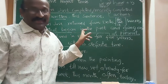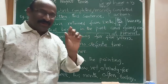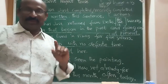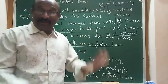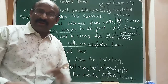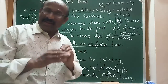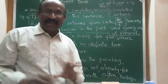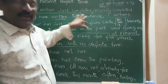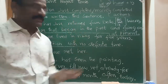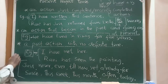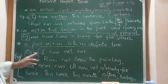If the sentence contains time expressions like last week, last month, long ago, once, once upon a time, long back — these indicate simple past tense, not present perfect. So when you see those keywords, use simple past. Always check the keywords to identify which tense to use.